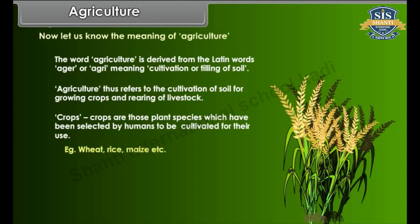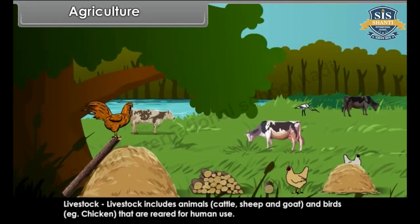Examples of crops include wheat, rice, maize, etc. Livestock includes animals like cattle, sheep and goat and birds — for example, chicken — that are reared for human use.